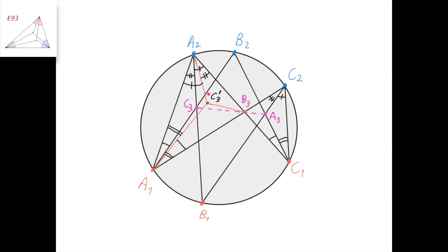Construct the point C3' to be the isogonal conjugate of C3 with respect to triangle A1, B3, A2. This gives us several equal angle pairs. Now consider triangle A1, A2, B3 with point C3' inside, and the similar triangle C1, C2, B3 with point A3 inside. By comparing the equal angles in both triangles, we find that C3' and A3 are corresponding points in the similar triangles. It follows that triangle A2, B3, C3' is similar to triangle C2, B3, A3.